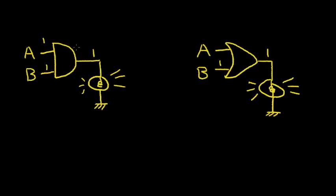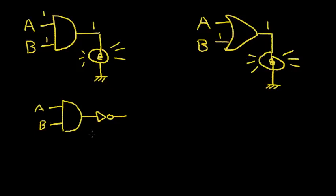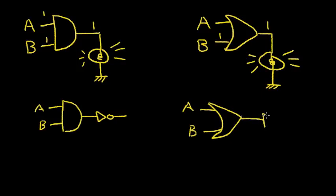In CMOS, we can generate the AND function and the OR function, but it's more simple to generate what we call the NAND function and the NOR function — it requires fewer transistors. If we take the AND function with inputs A and B and add an inverter to the output, we get a NAND gate. For a NOR gate, we do the same with the OR symbol — take inputs A and B and add an inverter to invert the output signal.